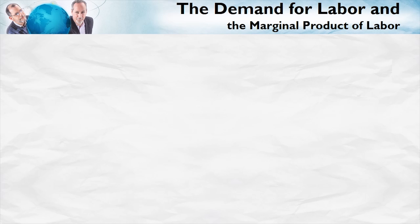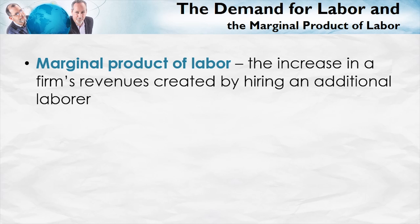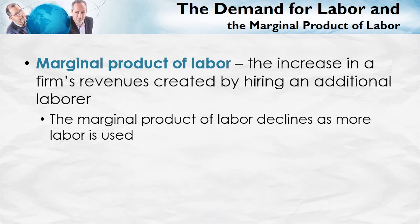What makes the demand for labor different than the demand for apples is that the demand for labor is a derived demand. Firms hire workers because the workers increase their revenues. The key idea behind the demand for labor is the marginal product of labor — the increase in a firm's revenues created by hiring an additional laborer. We're going to see several important things about this marginal product of labor. First, it declines as more labor is added.